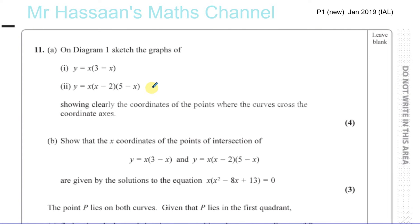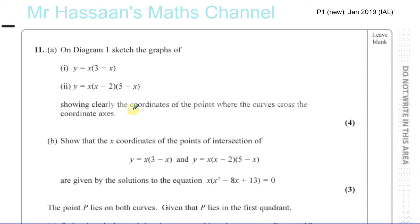Question number 11, part A from P1, the new international A-level Excel paper from January 2019. We're asked to draw on diagram 1, which is on the next page. We're asked to sketch the graphs of these two functions: y equals x times 3 minus x, and y equals x times x minus 2 times 5 minus x, showing clearly the coordinates of the points where the curves cross the coordinate axes.